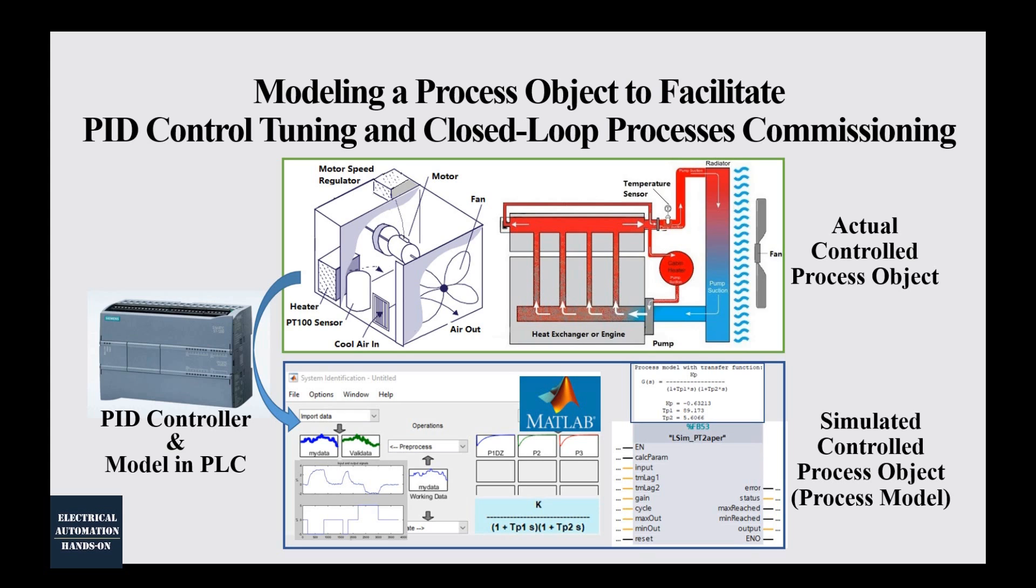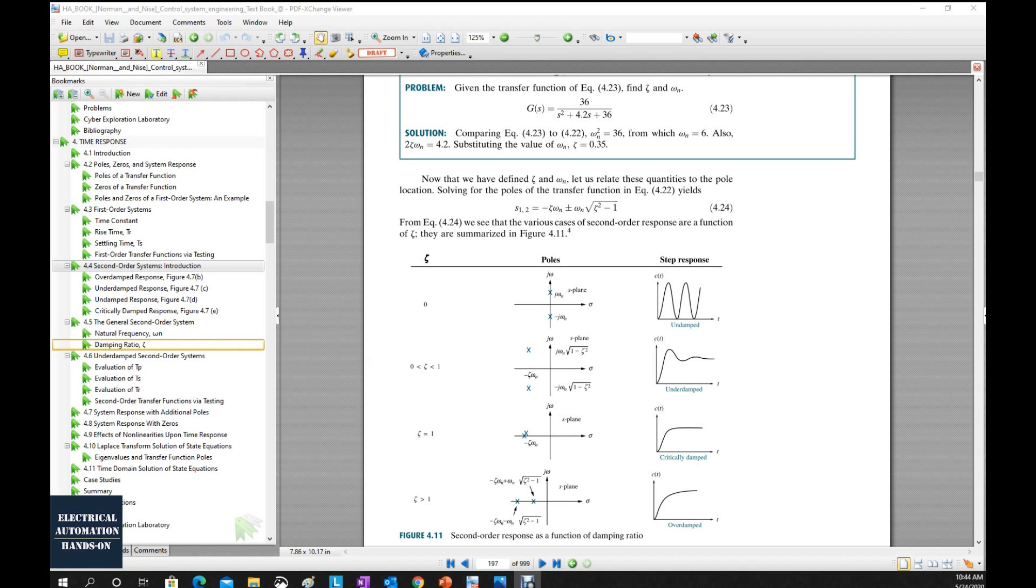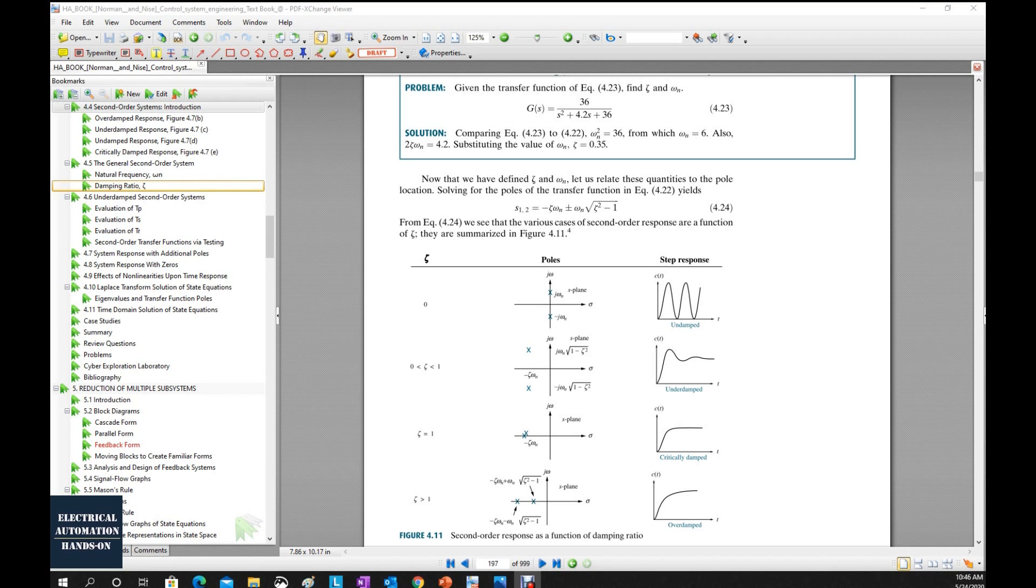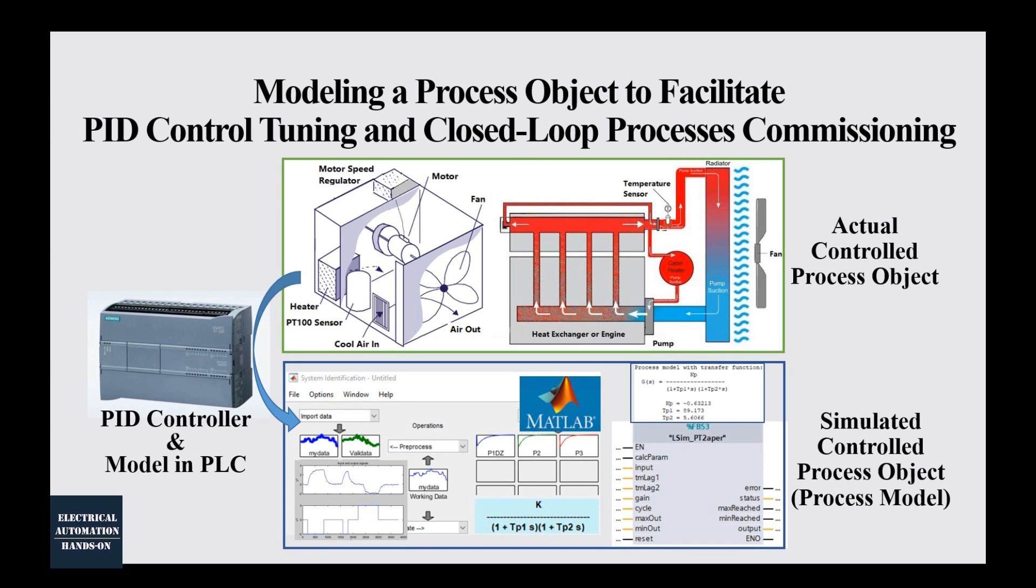And in another hand, most of our electrical automation or controls engineer, we do have an education background on the first order and the second order transfer function in S domain and the classical controls theory. However, when we studied those knowledge, we stayed in the university or colleges. So when we shift to the work, so basically we will far away from the theory. But actually, those knowledge can support or facilitate our commissioning and our control task.